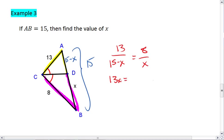Cross multiply, we get 13X equals 8 times the quantity 15 minus X. We distribute our 8, we get 8 times 15 which is 120 minus 8X.